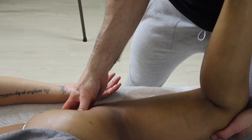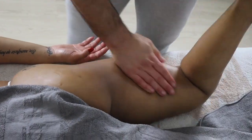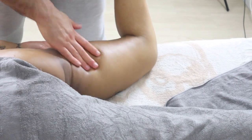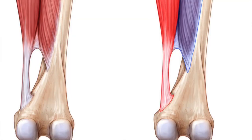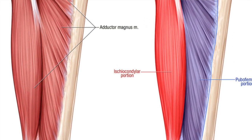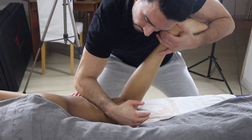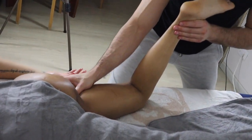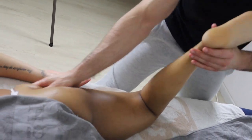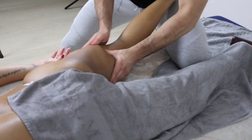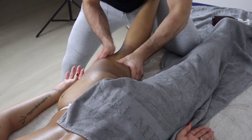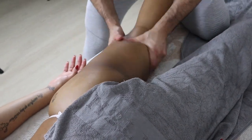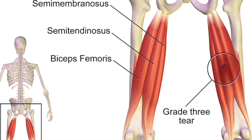Another muscle that gets really tense is the tensor fasciae latae. The TFL can get really tense, especially if you have a weak iliopsoas — I've found this relationship to be really true. Now I'm working on the adductor magnus, which is a really interesting muscle: the upper fibers work as an extensor of the hips, while the lower fibers work as an adductor and flexor of the hips. Working on the TFL into the biceps femoris meeting the semimembranosus — that midpoint is generally where hamstring pain and tears occur.